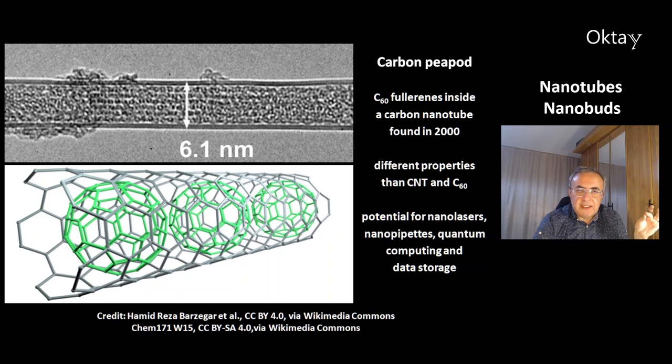This is the carbon peapod. It has C60 molecules, fullerenes, inside a carbon nanotube. They were found in the year 2000. At the bottom you can see the structure. The carbon peapods have different properties than carbon nanotubes or fullerenes. They have big potential for nanolasers, nanopipettes, quantum computing and data storage.